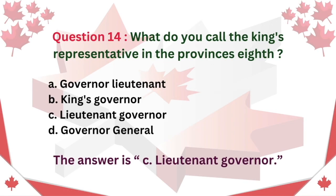Question 14: What do you call the king's representative in the provinces? A. Governor-Lieutenant. B. King's governor. C. Lieutenant Governor. D. Governor-General. The answer is C: Lieutenant Governor.